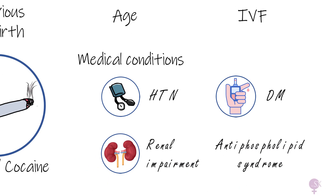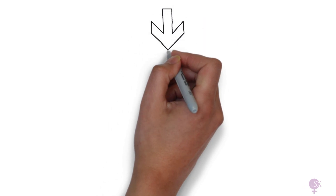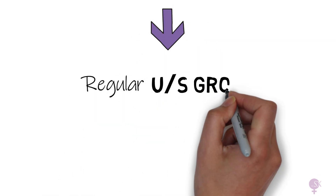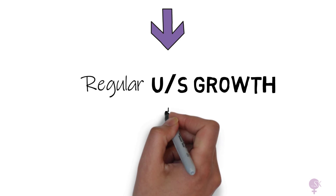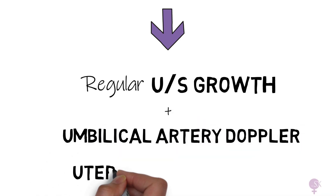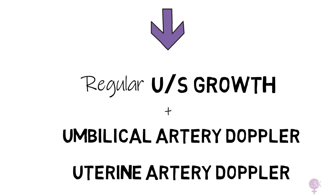These risk factors are categorized further into minor and major risk factors according to the RCOG guidelines, and from there appropriate antenatal care is provided. This can involve regular ultrasounds to monitor the growth of the baby and Doppler studies — essentially umbilical artery Doppler and uterine artery Doppler.